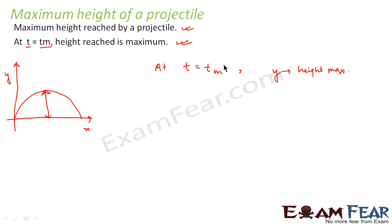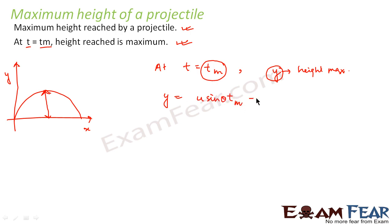So when time is equal to t_m, whatever value of y we get, that should be the value of the maximum height. We know the expression for y is: y = u·sinθ·t − ½g·t². So here t will be replaced by t_m, giving y = u·sinθ·t_m − ½g·t_m². Now we will put the value of t_m here.